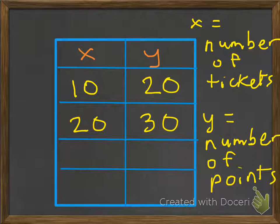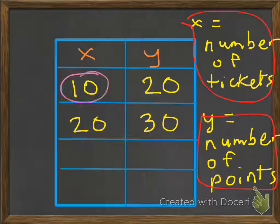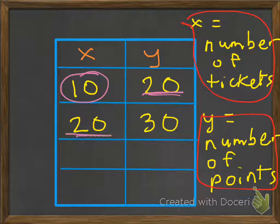So let's say x is our number of tickets. And y will be the number of points needed. So if we have our x, we have 10, we're going to get the 20 points. Or we need 20 points to get the 10 tickets. Same thing, 20, we need 30 points.